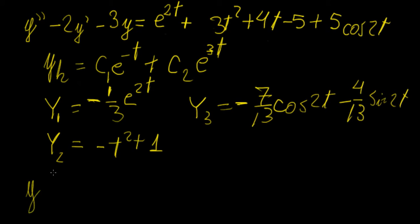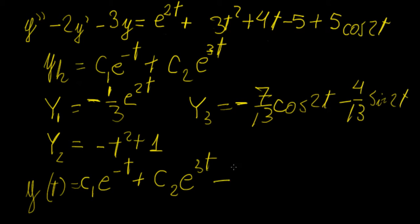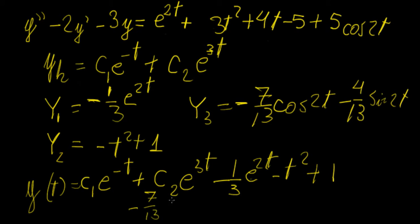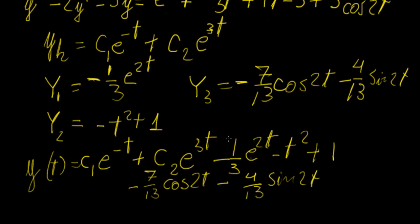So what's the general solution? y(t) is going to be the sum of all these functions: c1·e^(-t) + c2·e^(3t) - 1/3·e^(2t) - t² + 1 - 7/13·cos(2t) - 4/13·sin(2t). This is a direct consequence of the linearity of the differential equation, and it allows us to solve complicated equations like this by breaking them down into separate functions.